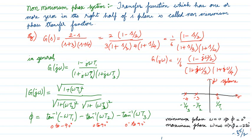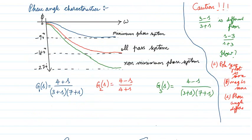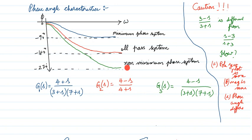Now let's see the phase angle characteristics. I have plotted the phase response for all three systems. For a minimum phase system, the phase angle goes from 0° to a maximum of −90°. For an all-pass system, the phase angle goes from 0° to a maximum of −180°. For a non-minimum phase system, the phase angle goes from 0° to −270°.